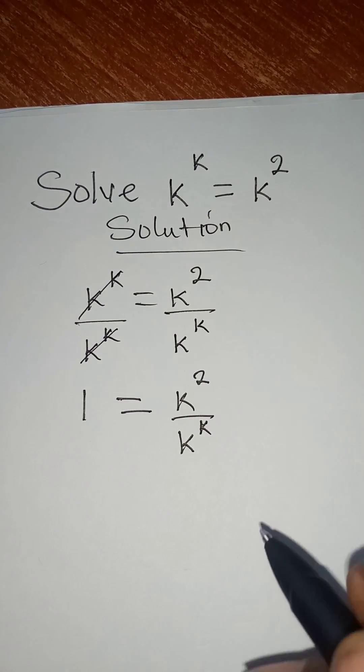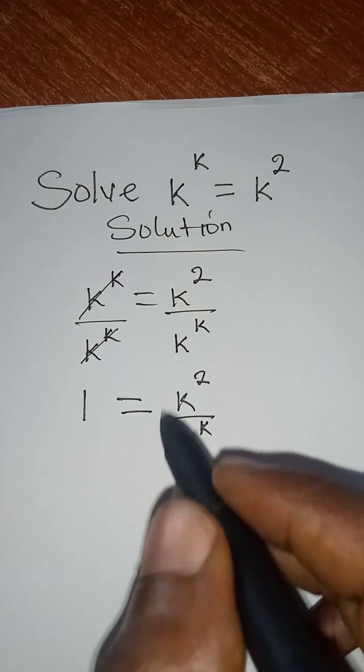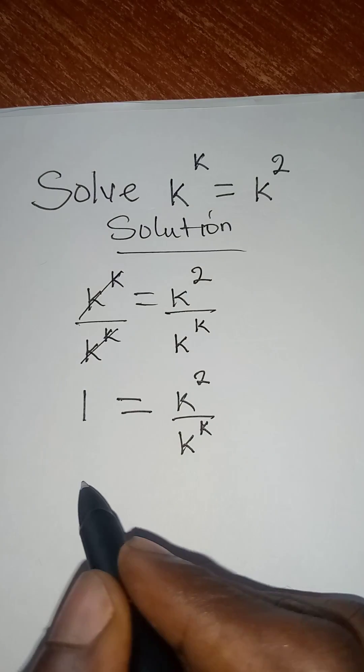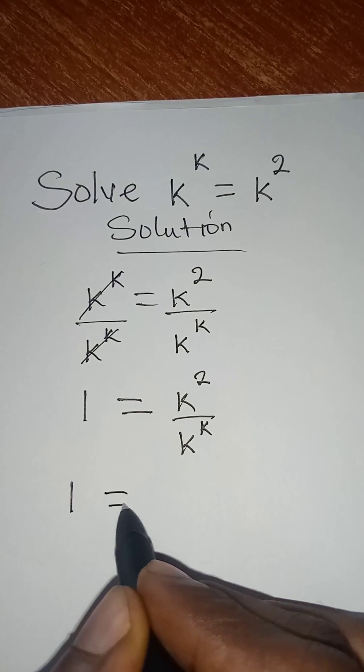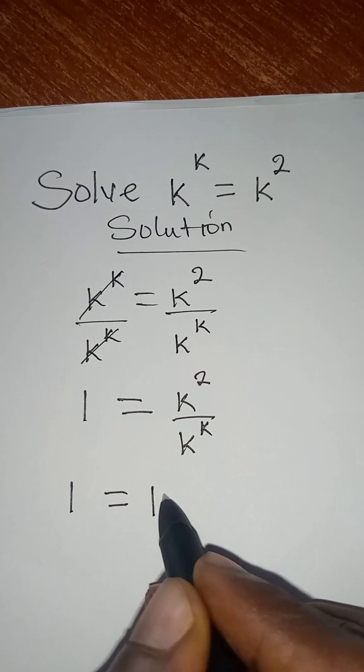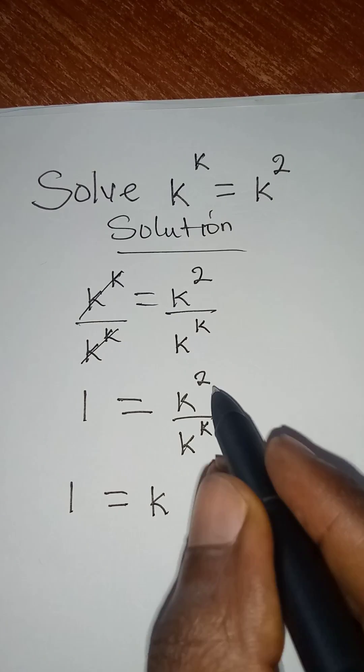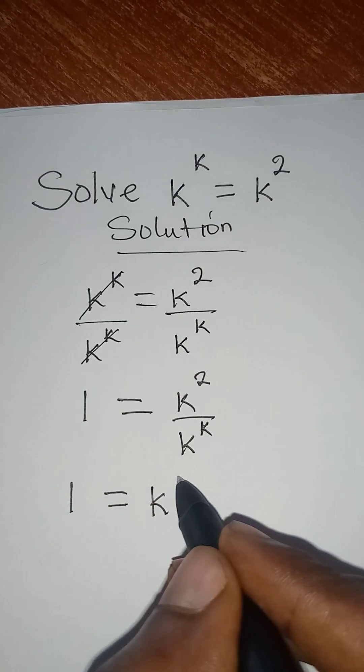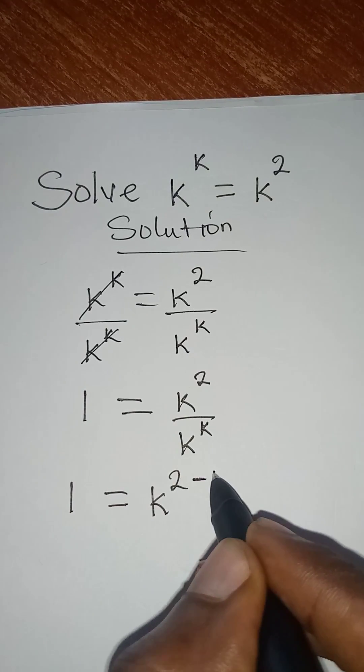And then according to the law of indices, I can work on the right hand side. So 1 will be equal to, I'll pick one of the bases which is k, then subtract the powers. We have 2 minus k.